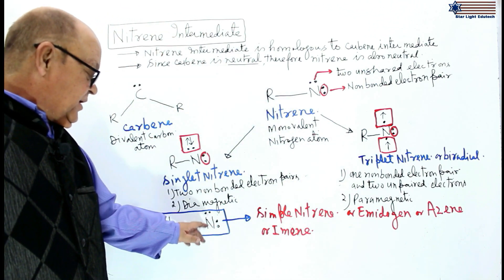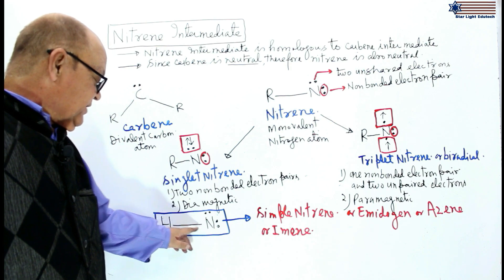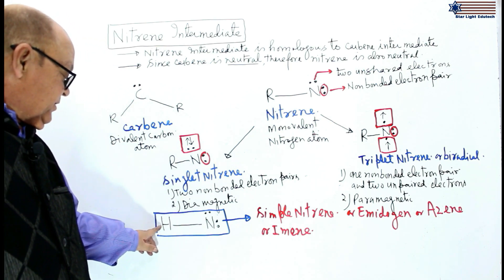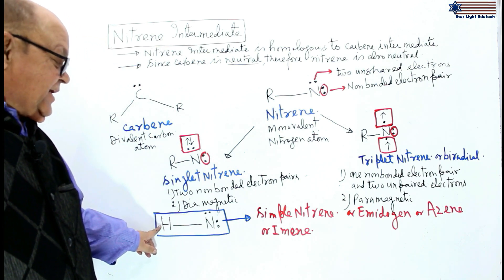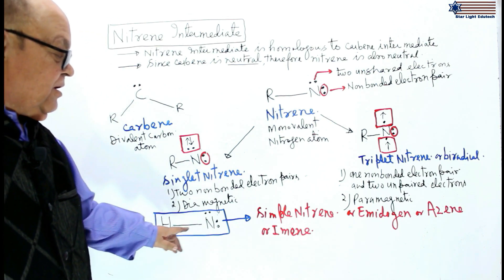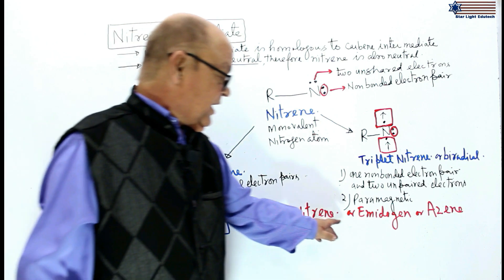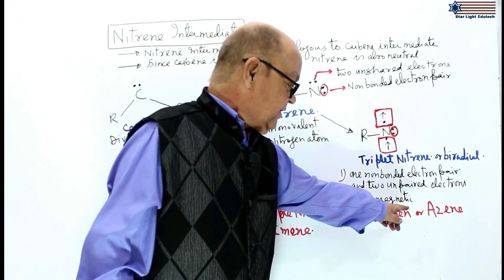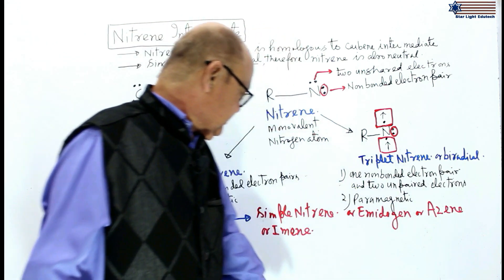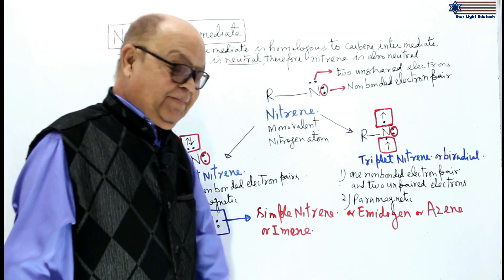If in nitrene, the nitrogen is directly linked to a hydrogen atom, then it is called simple nitrene, or imidogen, or azine, or imine.